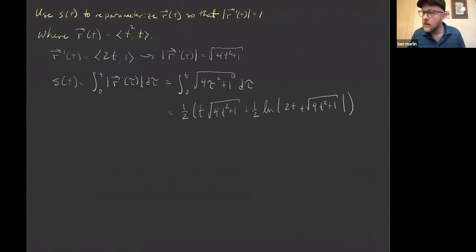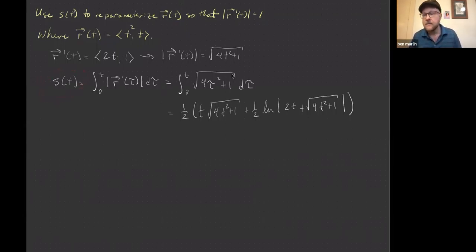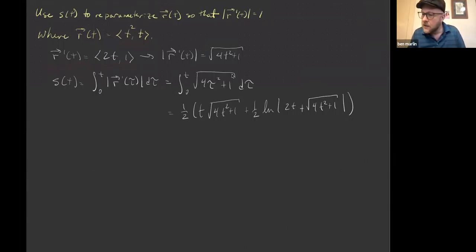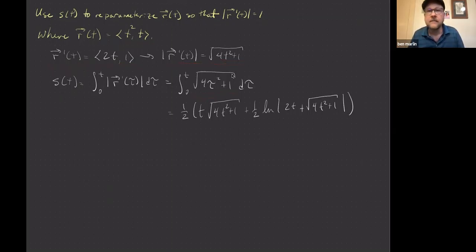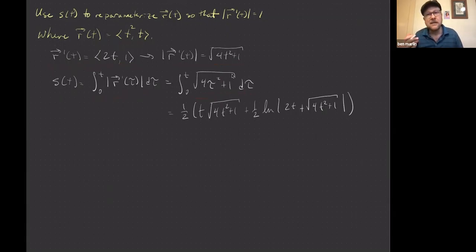If we're going to re-parameterize, we need to calculate s(t). You take r'(t); since r(t) = (t², t), that's just going to be (2t, 1). Then when you take the magnitude of that, you get √(4t² + 1). When you write it in s(t), you replace t with τ just temporarily — because if t appears in two places it's easy to get confused. So we're integrating √(4τ² + 1) dτ.